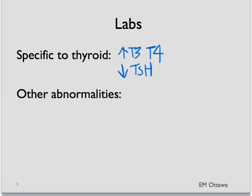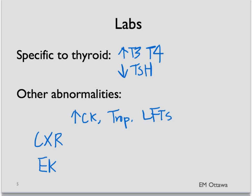Because of the effect of thyroid storm on the body, we expect the patient to have a high CK, sometimes a troponin, and high LFTs. In a patient who is short of breath or you think is in pulmonary edema, a chest X-ray is often helpful. Also, if the patient is in any tachyarrhythmia, a 12-lead ECG or rhythm strip would be very helpful in sorting this out.